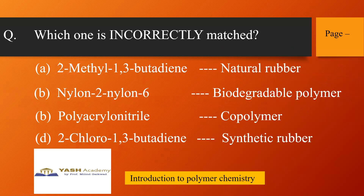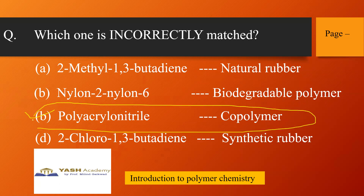Next, from introduction to polymer chemistry — which one is incorrectly matched? Options: 2-methyl-1,3-butadiene and natural rubber; nylon-2-nylon-6 as a biodegradable polymer; polyacrylonitrile as a co-polymer; and 2-chloro-1,3-butadiene as synthetic rubber. Polyacrylonitrile is actually a homo-polymer or addition polymer, not a co-polymer. So this is the incorrectly matched option.